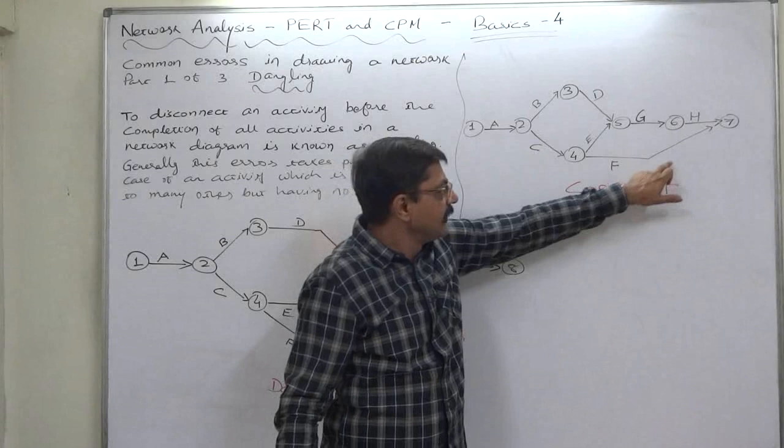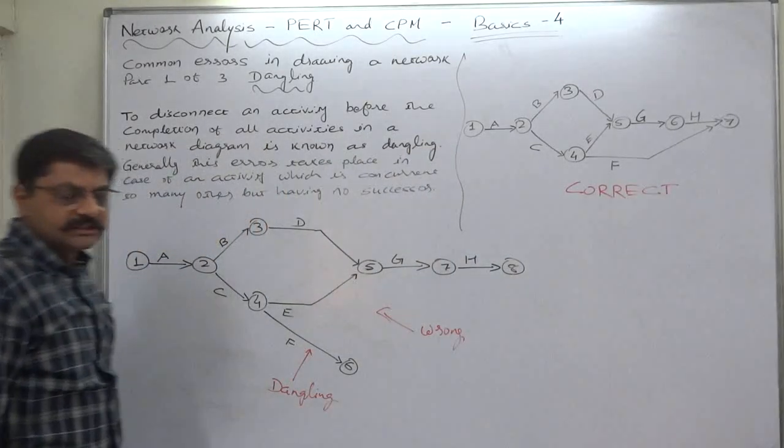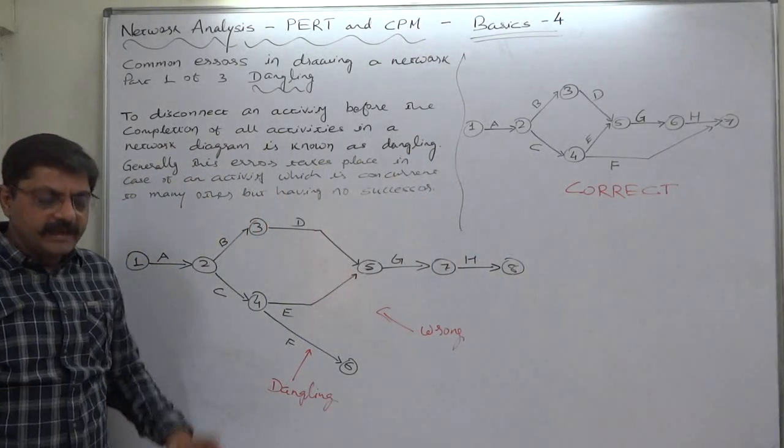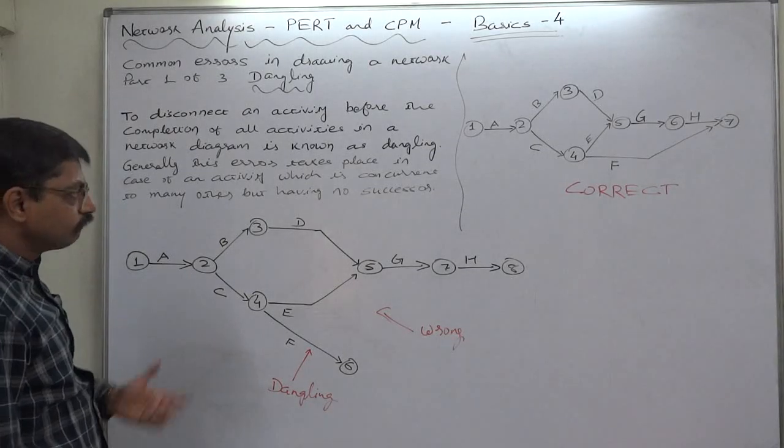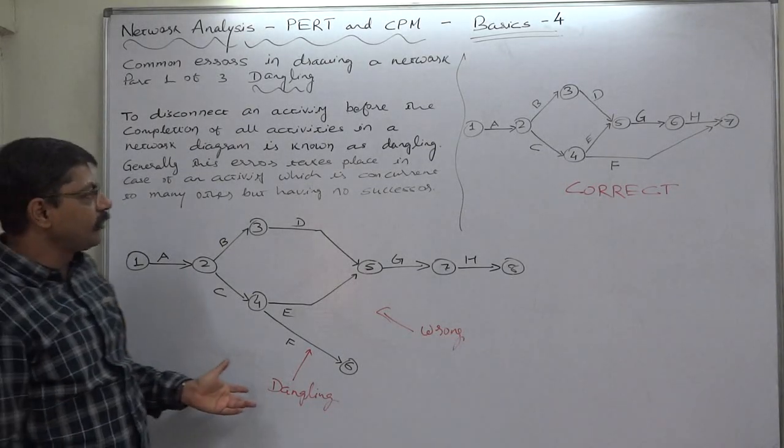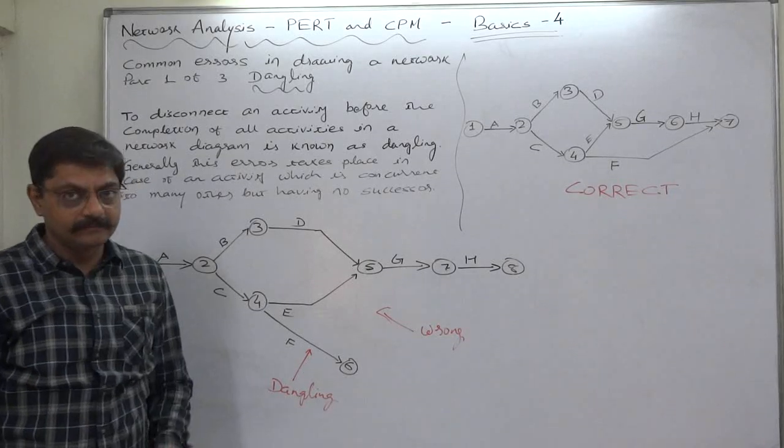...no successor in the network diagram. So this is an error—an error possible to take place at the time of drawing the network diagram. Dangling. That's it. Thank you very much.